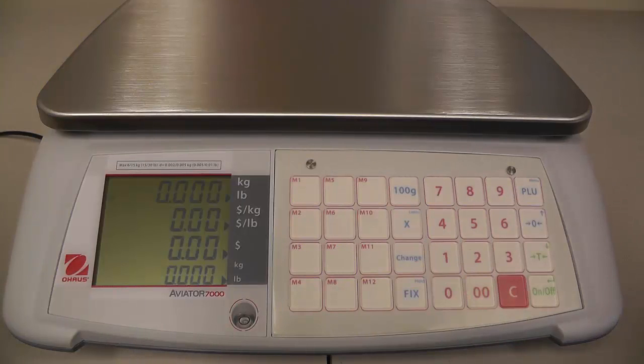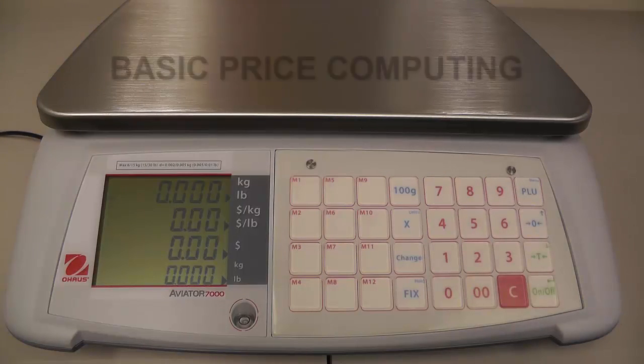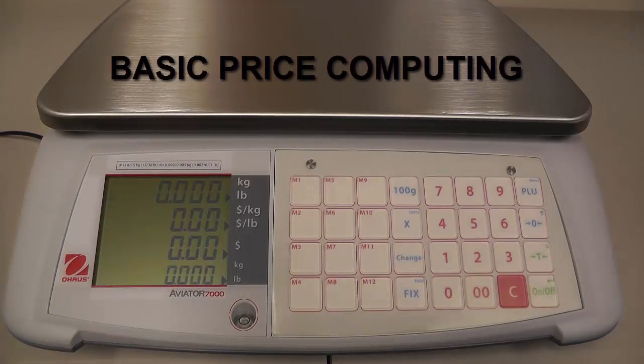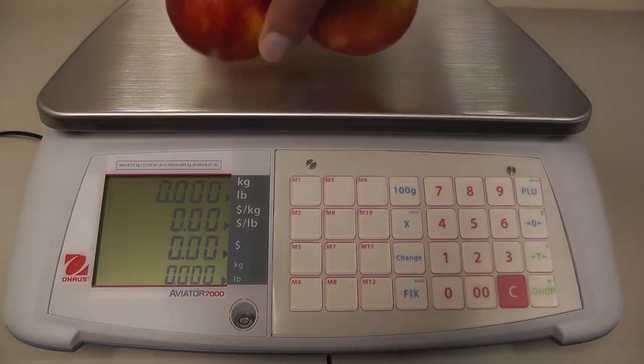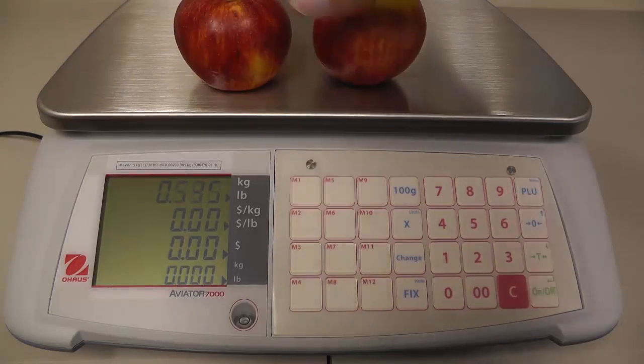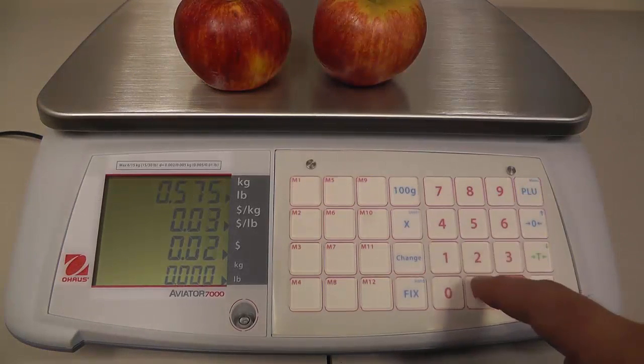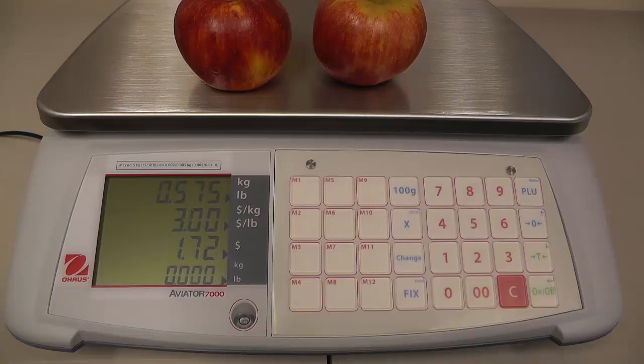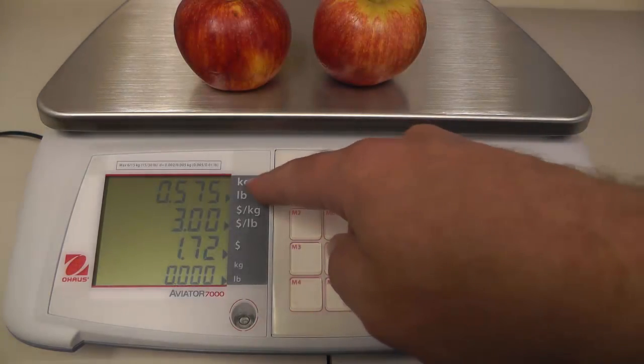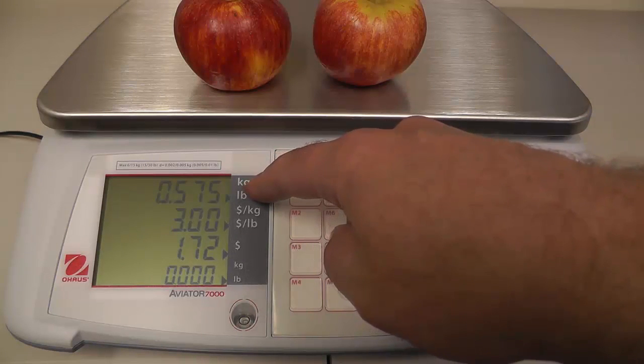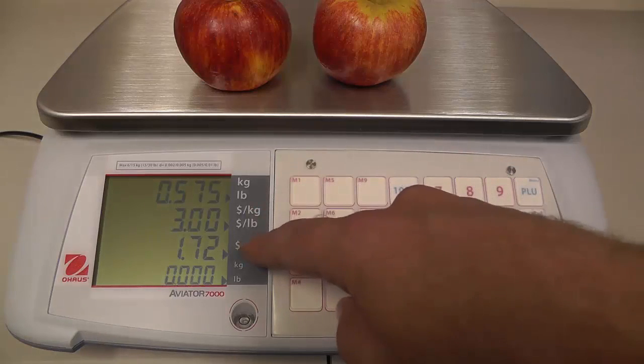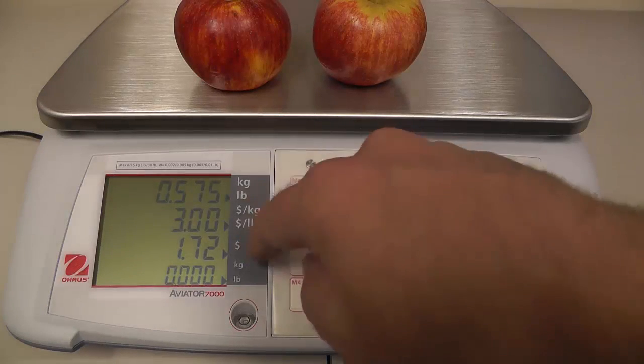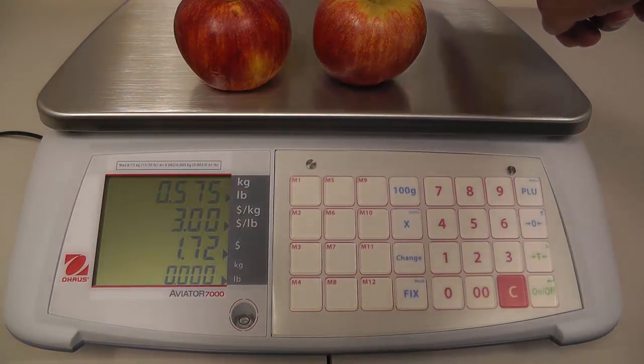Our first example is just the standard normal way that you use a price computing scale, by placing your items on the scale. In this case we'll put a couple of apples on the scale and we'll say they're three dollars a pound. As you can see, the scale tells us that the customer owes you a dollar 72 cents. We've got the item weight here, the total weight that's on the scale, the dollar per pound that we entered, and then what the customer owes you. This same information is also on the back side on the customer side of the scale.